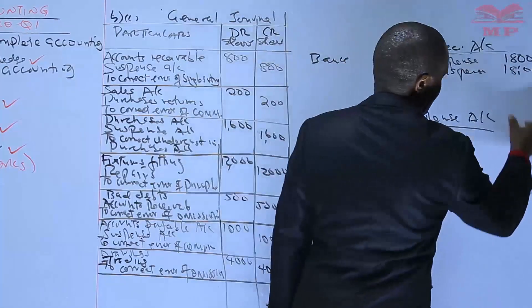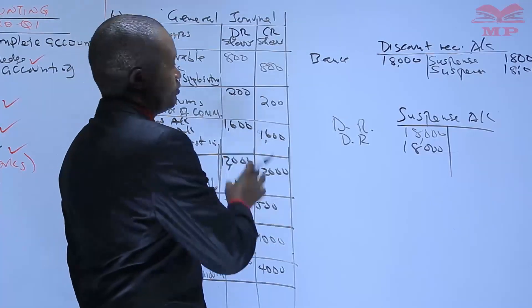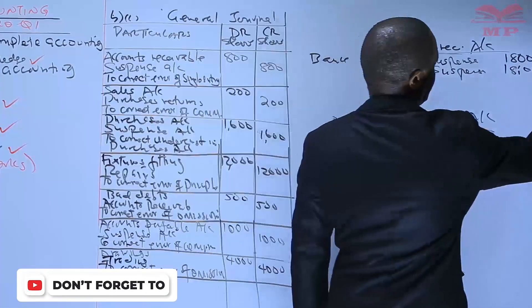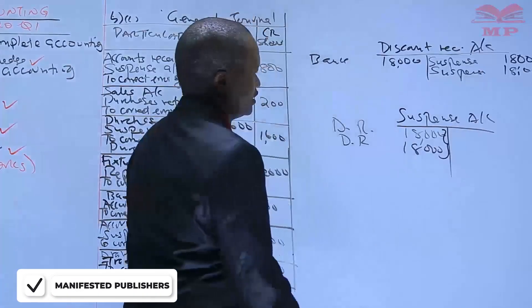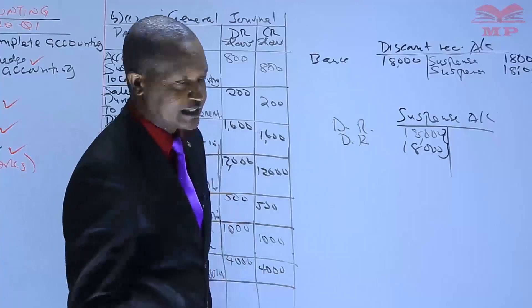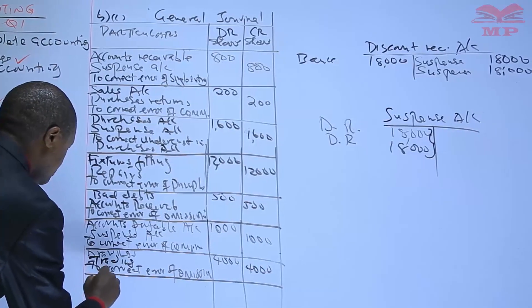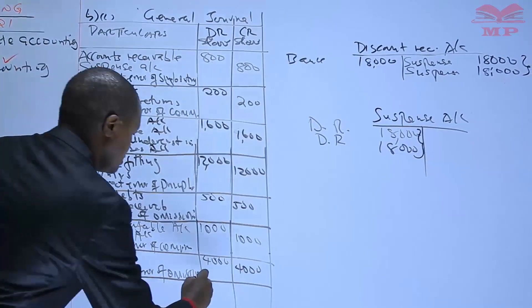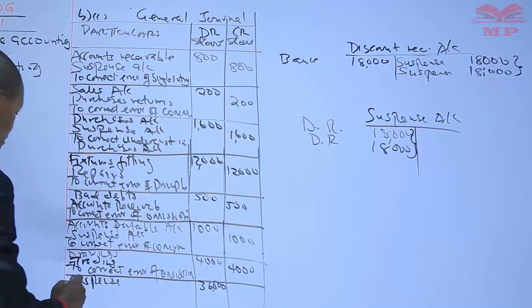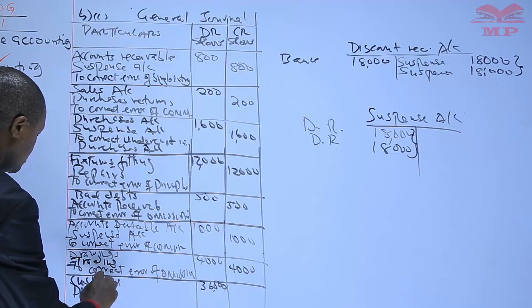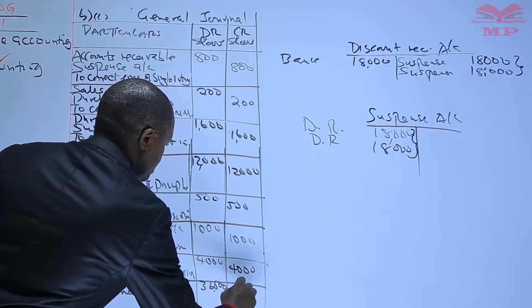I'm using a long method to help you understand. In the journal proper we just use totals — these two entries combine to 36 million. So the suspense account is debited with 36 million and discount received is credited with 36 million.